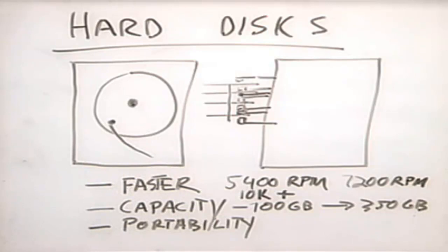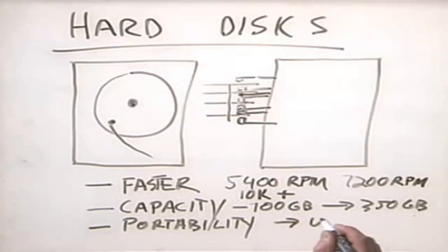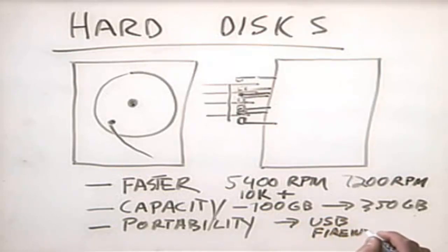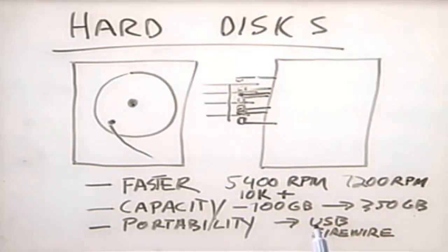The one disadvantage of a hard disk drive is portability — your standard hard disk drive has to be installed inside the computer and it's very difficult to move to another system. However, there are portable versions available that use a USB or FireWire interface. You can unplug the hard disk drive from the USB port on one system, plug it into another system, and immediately have that disk available.